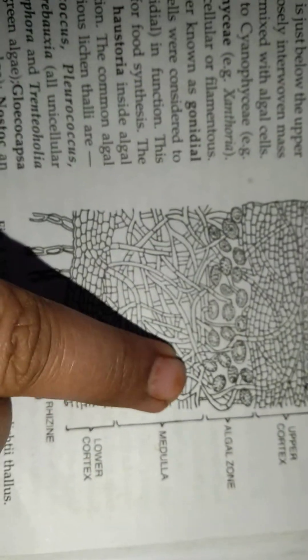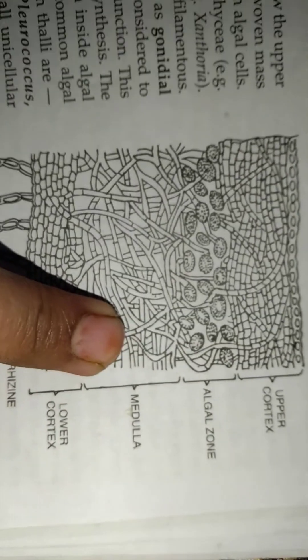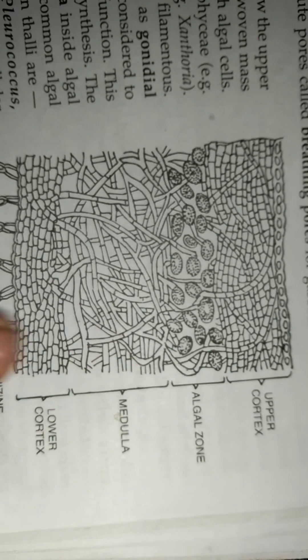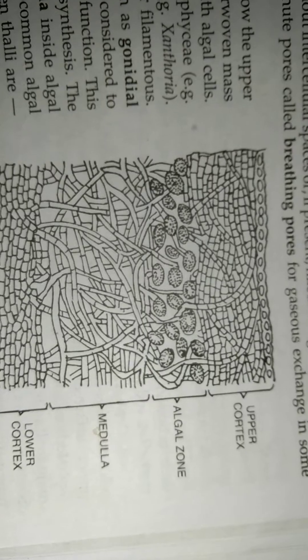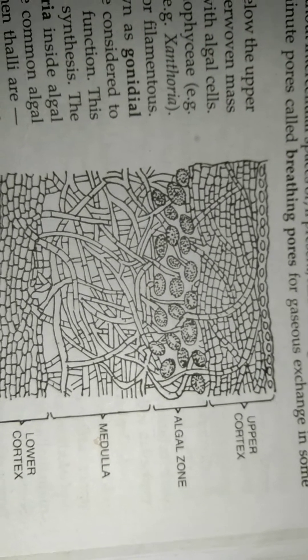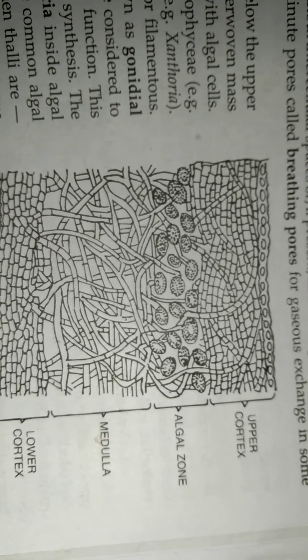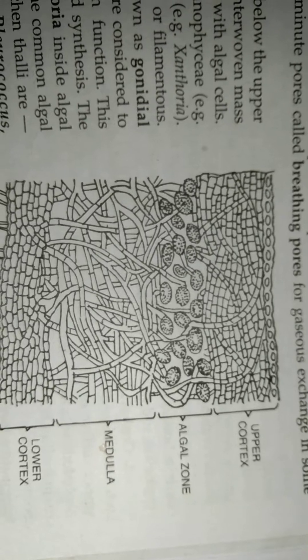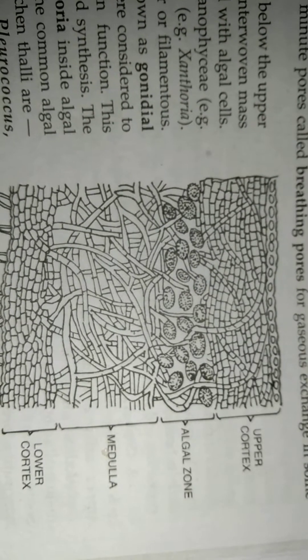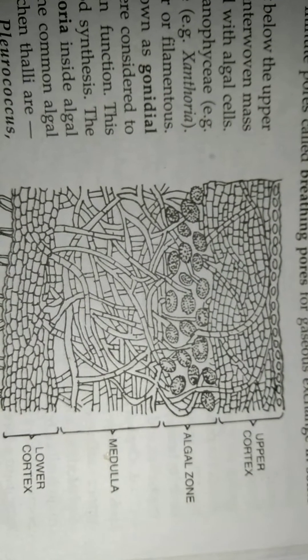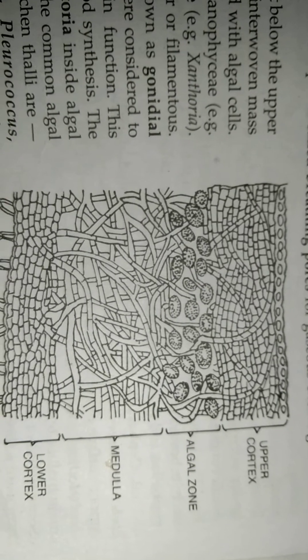Then next is medulla. This is present below the algal zone. And this is composed of interwoven mass of fungal hyphae forming the loose prosenchyma in which the individuality of hyphae is not lost. They can be easily distinguished.